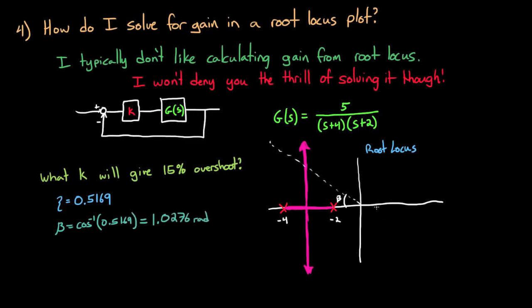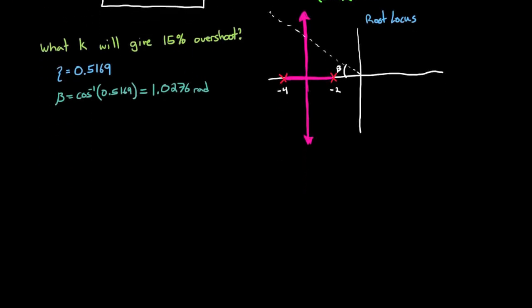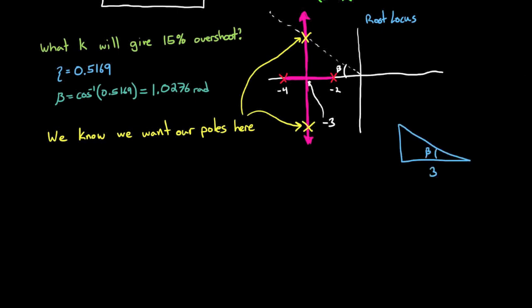If I draw my line of constant damping, I can see where it crosses the root locus and know that we want our two poles to end up right where they cross. Again, we can solve for where this is using trigonometry. This triangle has a real component of 3 and an imaginary component equal to 3 times the tangent of β. I found it to be just under 5. So we know precisely where the pole should be, not just approximately from a crude drawing.